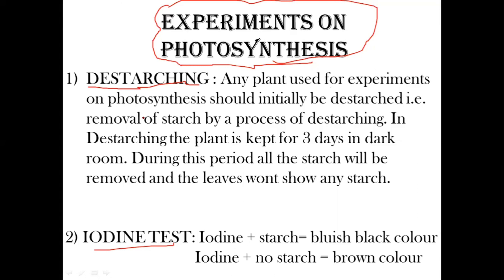So I keep the plant in a dark room for 2–3 days. Dark room means no sunlight; without sunlight, plants cannot carry out photosynthesis; without photosynthesis, plants cannot produce food. The plant uses the reserved starch for energy. After 2–3 days, the starch is completely broken down. This is the mechanism by which we destarch the plant — we remove all the starch from the plant.